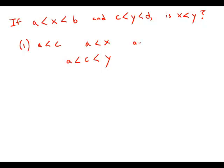To see this, let's just pick some values. Let's say that A is 10 and C is 12. We would know then that X has to be bigger than 10, and Y has to be bigger than 12. We could have Y equals 15 and X equals 11, or we could have Y equals 15 and X equals 20. So either X or Y could be bigger, given these constraints, because we're really only limiting the lower limit and not the upper limit. So statement number one is insufficient.